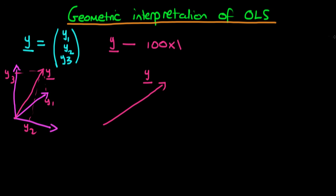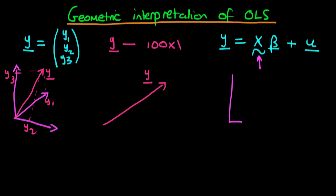Furthermore, if we think about our regression model — our regression model is y equals X times beta plus u — we can think about X, our matrix of independent variables. We know that we can think about each of the respective columns as representing the particular space spanned by that independent variable.